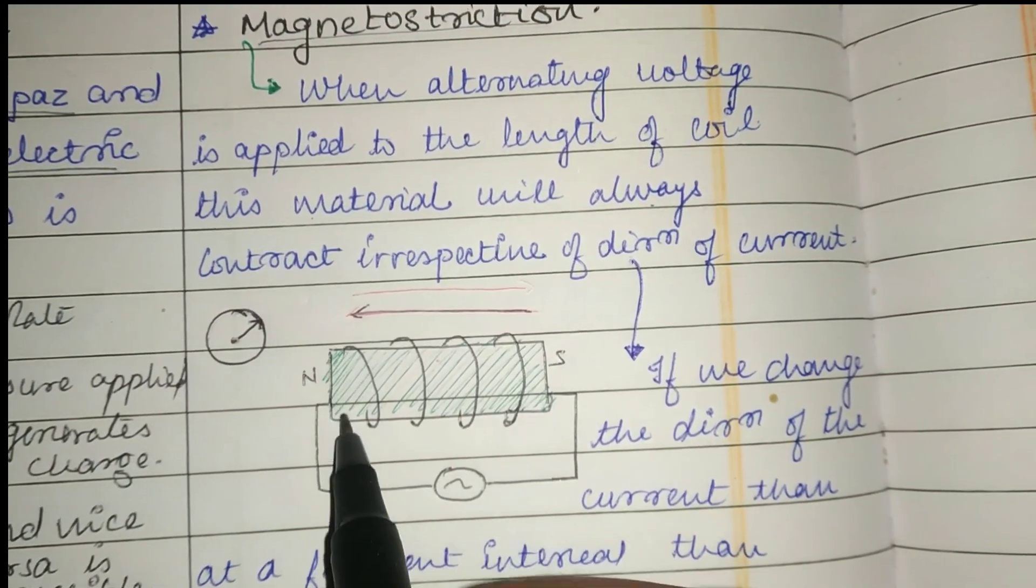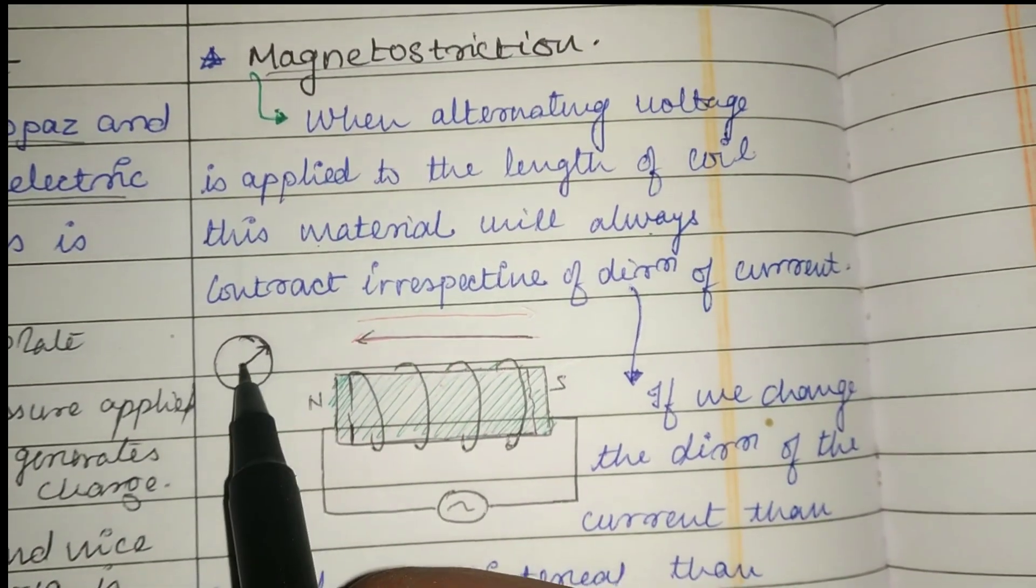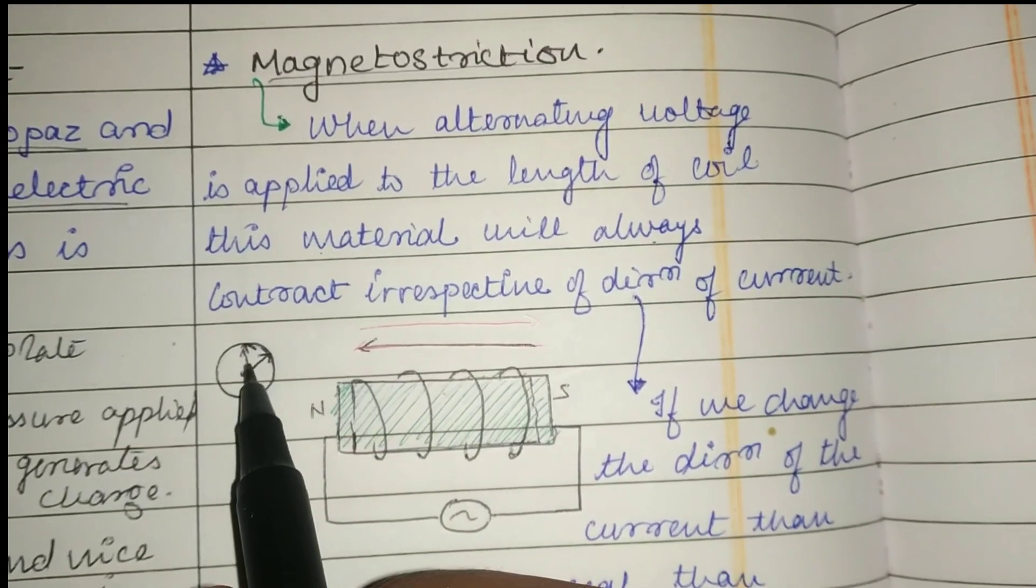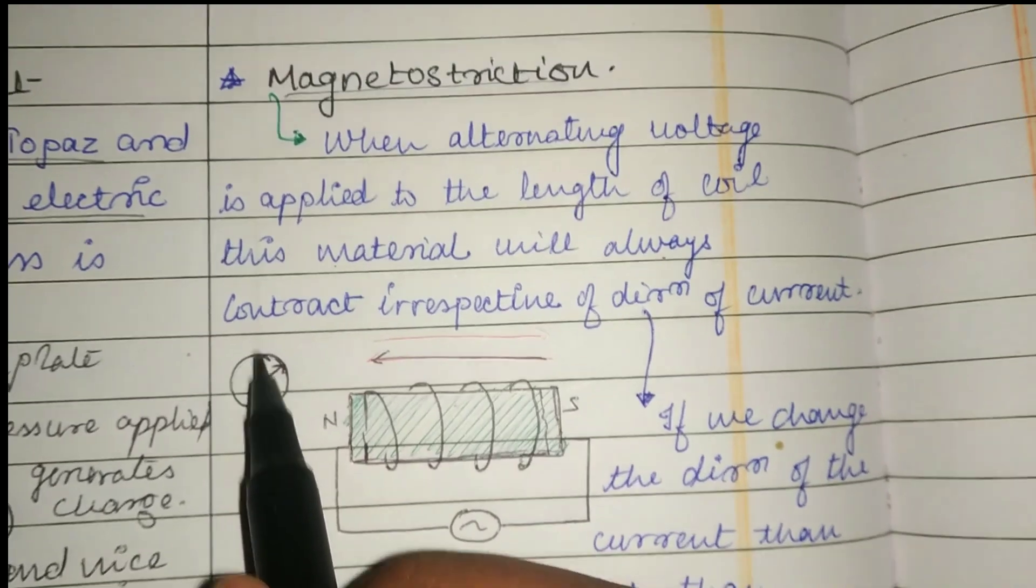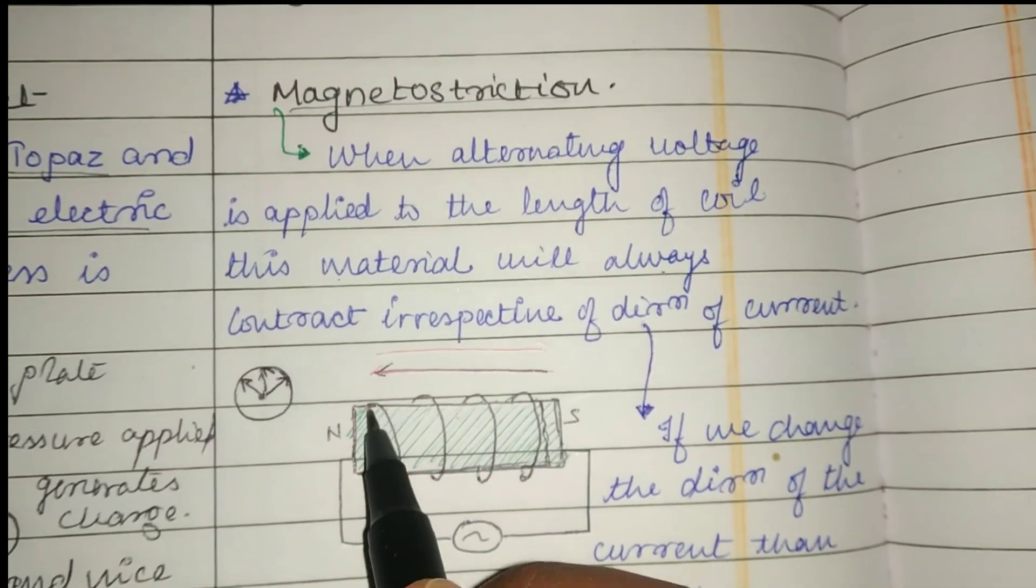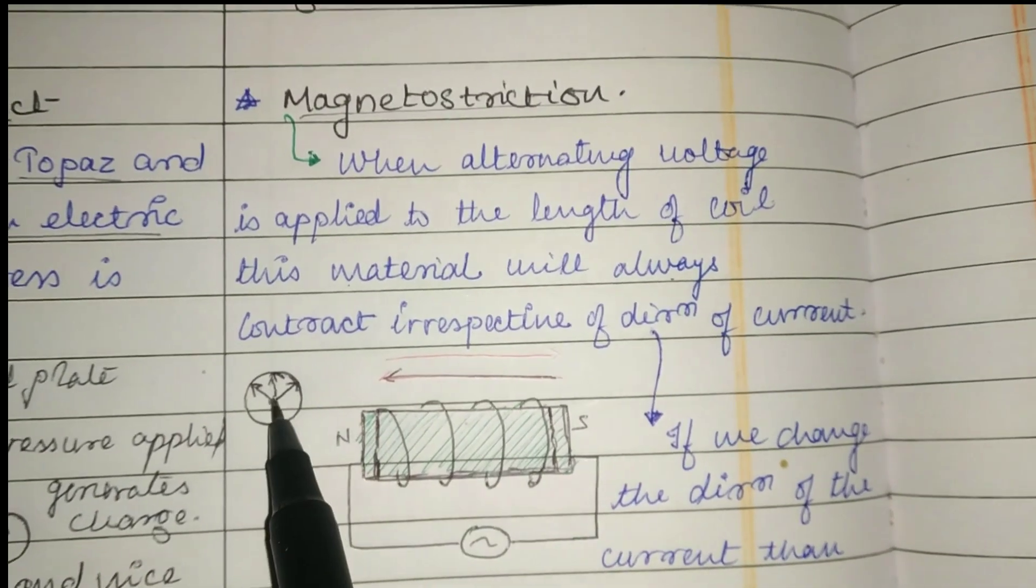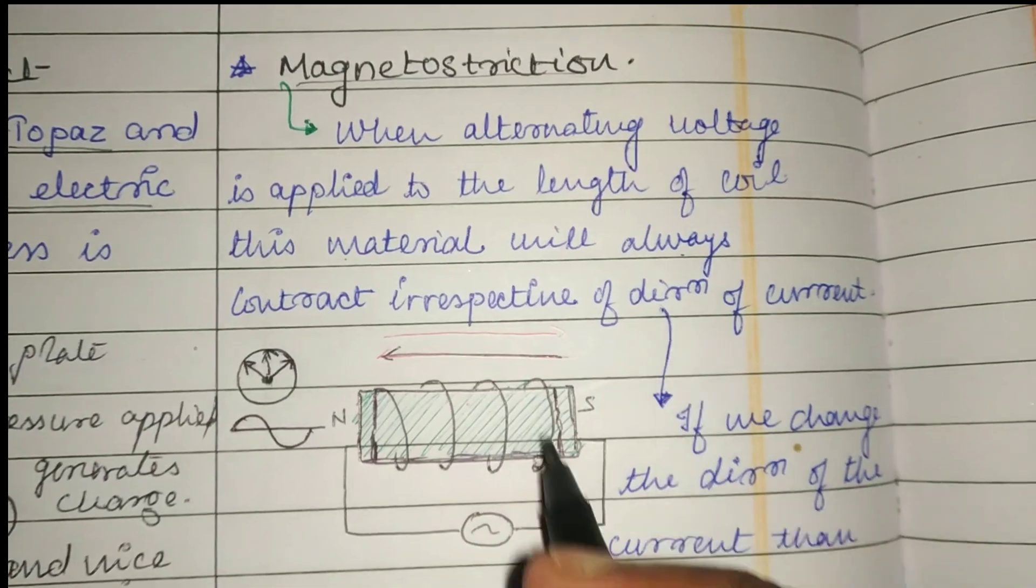First, the current is in this direction, and the nickel coil compresses. Then we change the direction of the current. First it goes to zero, and when it goes to zero, it expands back to its original position. When the current is reversed, it compresses again. This cycle of compression and expansion continues.